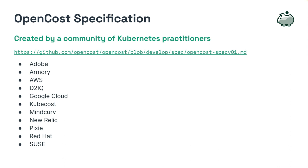The OpenCost spec is a vendor-neutral open source specification for measuring and allocating infrastructure and container costs in Kubernetes environments. The original specification came together with input from a wide range of Kubernetes practitioners, among them Adobe, AWS, Google Cloud, KubeCost, Red Hat, and SUSE.